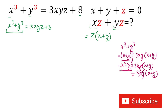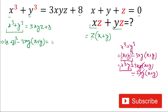So in place of x³ + y³ in the equation, we substitute (x + y)³ − 3xy(x + y), giving us: (x + y)³ − 3xy(x + y) = 3xyz + 8.